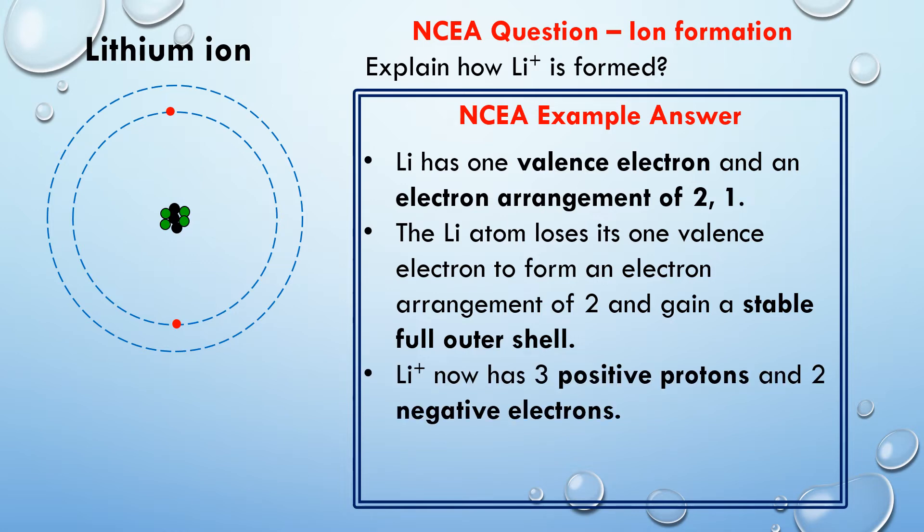So it now has three positive protons in the center of the nucleus and two negative electrons. So I'm clearly here stating that the lithium ion has three positive protons and two negative electrons. I'm describing the charge of the protons and the charge of electrons so I can unpack that in my last sentence. And my last sentence is going to be: compare the number of positive charges and the number of negative charges to give the overall charge.